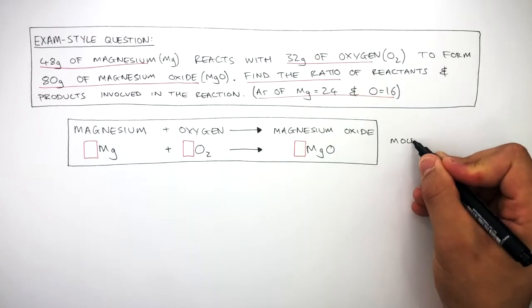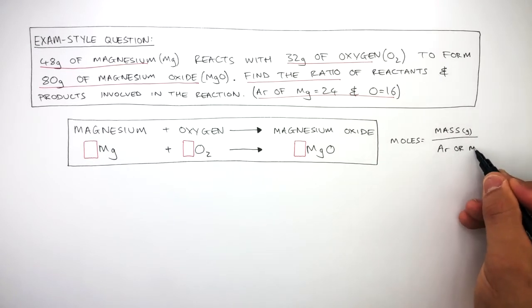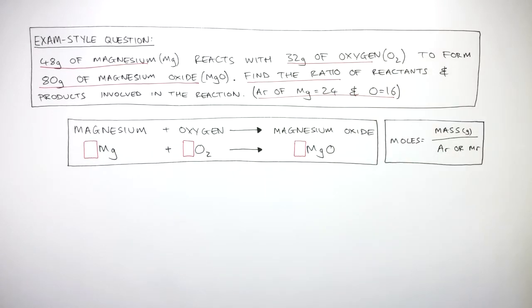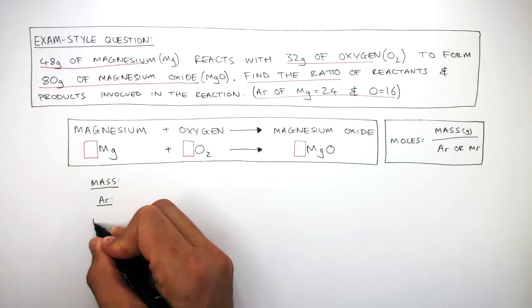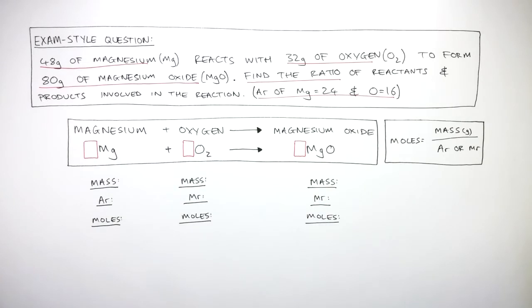To do this, we'll need the equation moles equals mass in grams divided by AR or MR. Next, we have to write mass, AR or MR, and moles underneath each substance in the equation. We then use the information of the different masses in the question and fill in the masses underneath each substance.